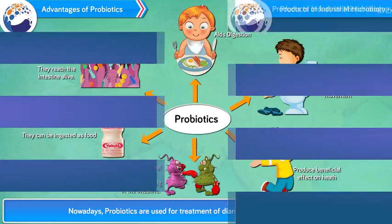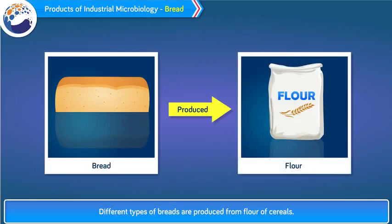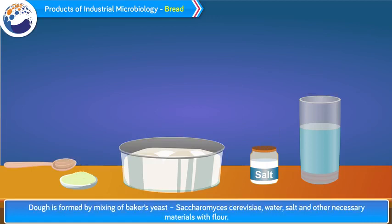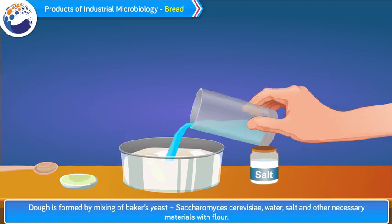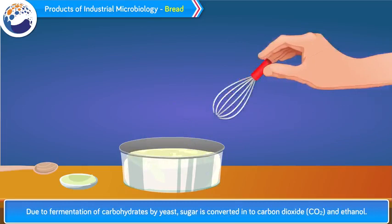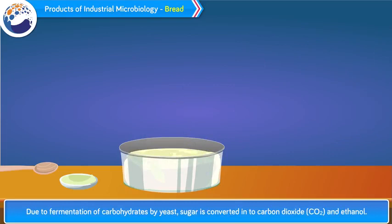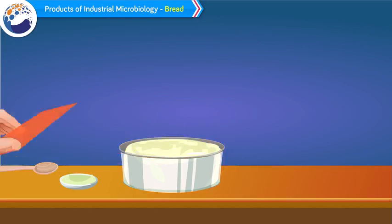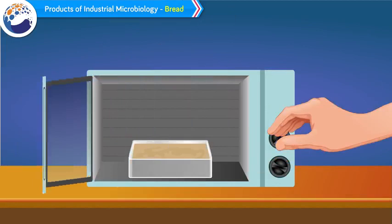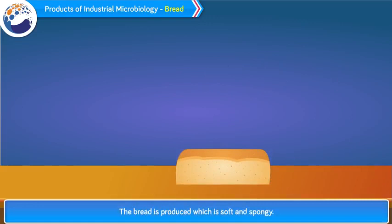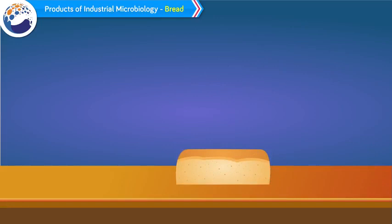C. Bread. Different types of breads are produced from flour of cereals. Steps in bread production: 1. Dough is formed by mixing of baker's yeast, Saccharomyces cerevisiae, water, salt and other necessary materials with flour. 2. Due to fermentation of carbohydrates by yeast, sugar is converted into carbon dioxide (CO2) and ethanol. 3. Dough rises up due to CO2. 4. The bread is produced which is soft and spongy. 5. Yeast is a rich source of carbohydrates, fats, proteins, vitamins and minerals. As a result, bread and other products become very nutritive.